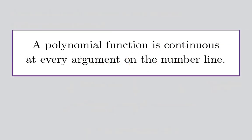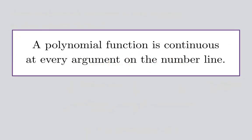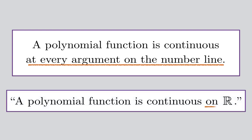So in the end, what we've proved is that the limiting value of p as x approaches a matches up with the value p of a, and so p is, by definition, continuous at a. This is a very powerful fact: a polynomial function is continuous at every argument on the number line. Instead of saying every argument on the number line, we could just say a polynomial function is continuous on ℝ — that's our shorthand way of saying it's continuous at any argument, no matter which argument you pick on the real number line.